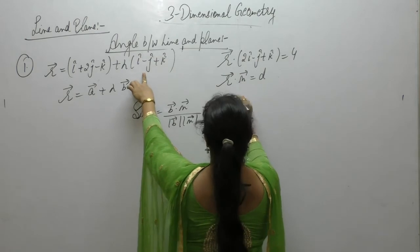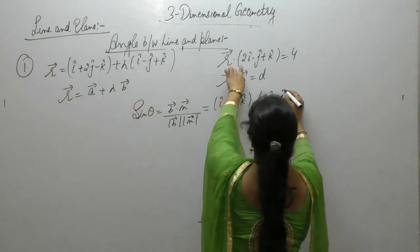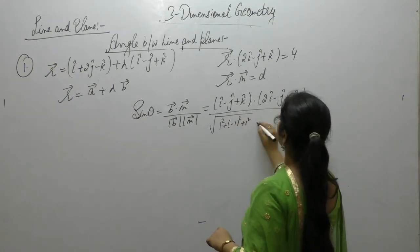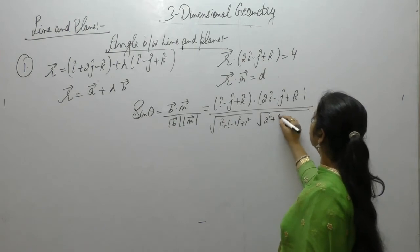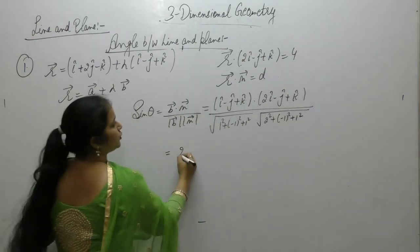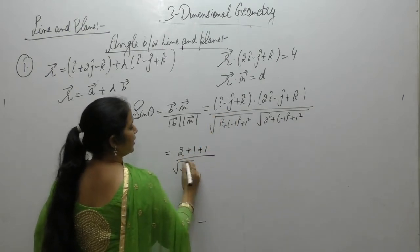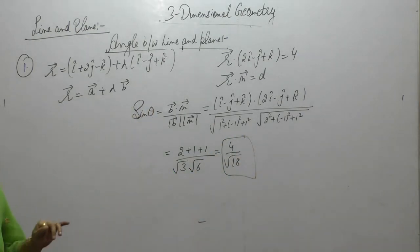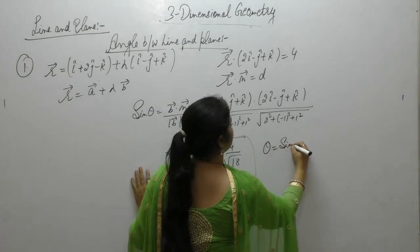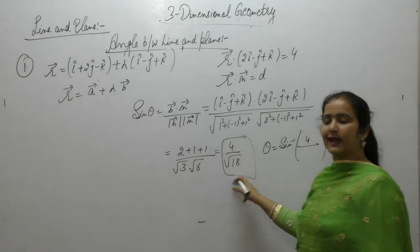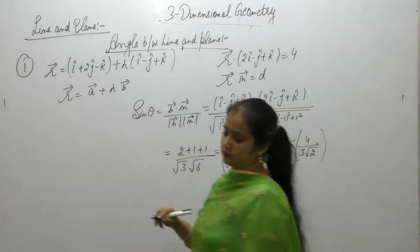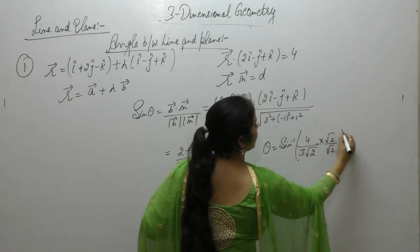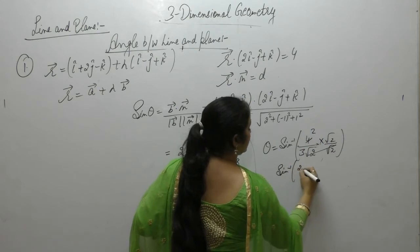Here b = i − j + k and n = 2i − j + k. So |b| = √(1² + 1² + 1²) = √3, and |n| = √(2² + 1² + 1²) = √6. Then b·n = (1)(2) + (−1)(−1) + (1)(1) = 2 + 1 + 1 = 4. So sin θ = 4 / (√3 · √6) = 4 / √18 = 4 / (3√2). Therefore θ = sin⁻¹(2√2 / 3).